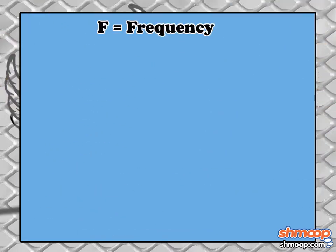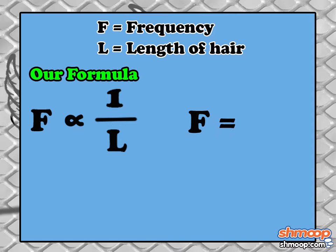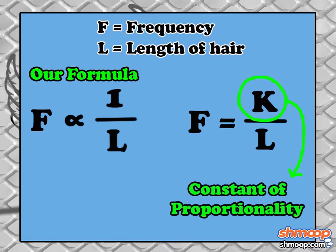We start by calling the frequency F and the length of the chest hair L. The problem tells us that the formula for frequency F is inversely proportional to L. So F equals K over L, where K is the constant of proportionality.